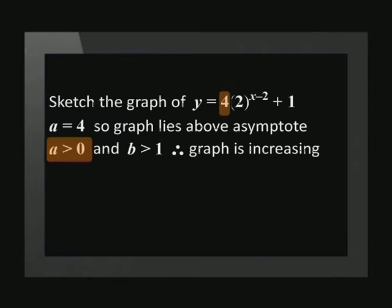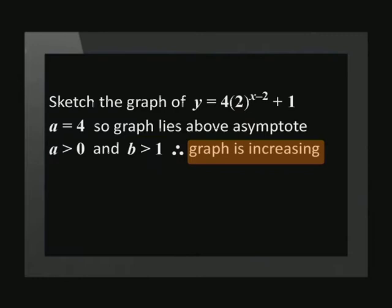Now we can determine whether the graph is an increasing or decreasing function by looking at the values of a and b. The value of a is positive and the value of b is greater than 1, so the graph is increasing.